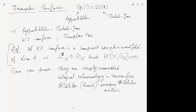The only surfaces you get are K3 surfaces and complex tori. A K3 surface is a compact complex surface with trivial canonical bundle — so Ω²_X is isomorphic to O_X — and with H¹(X, O_X) = 0. From this you can prove that H¹ = 0 implies simply connected, that the integral cohomology is torsion-free, and that they're all Kähler — in fact, that is a hard theorem.